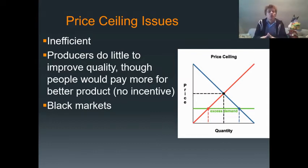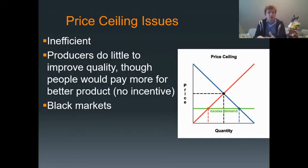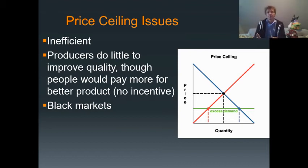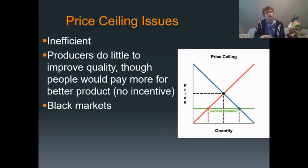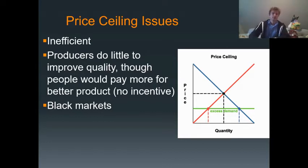What are the problems with price ceilings? First, they're inefficient — it causes fewer transactions to take place than would normally occur. The quantity supplied, which is what gets sold, is less than the equilibrium outcome, creating deadweight loss. Producers also have no reason to improve quality, because there's no incentive — they can't get any more money for a better product.